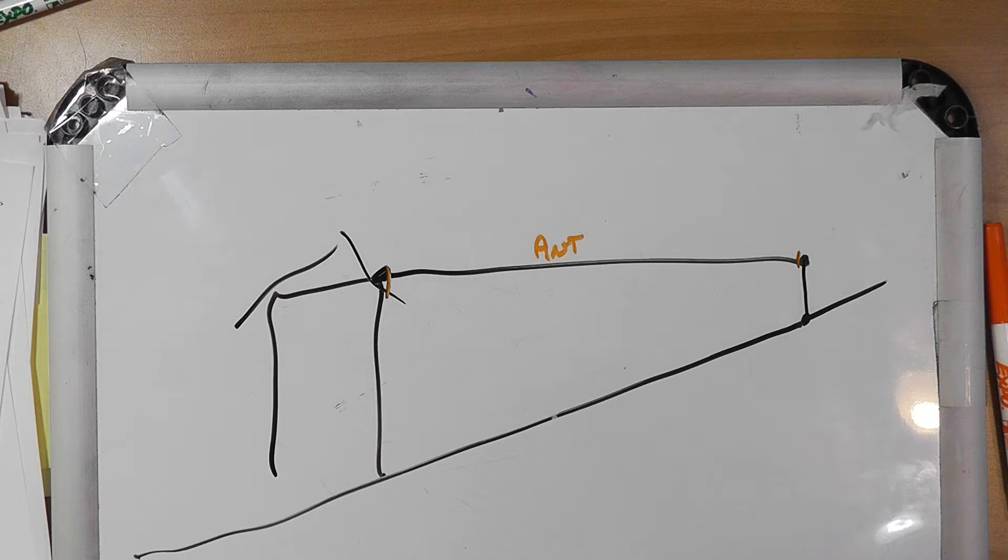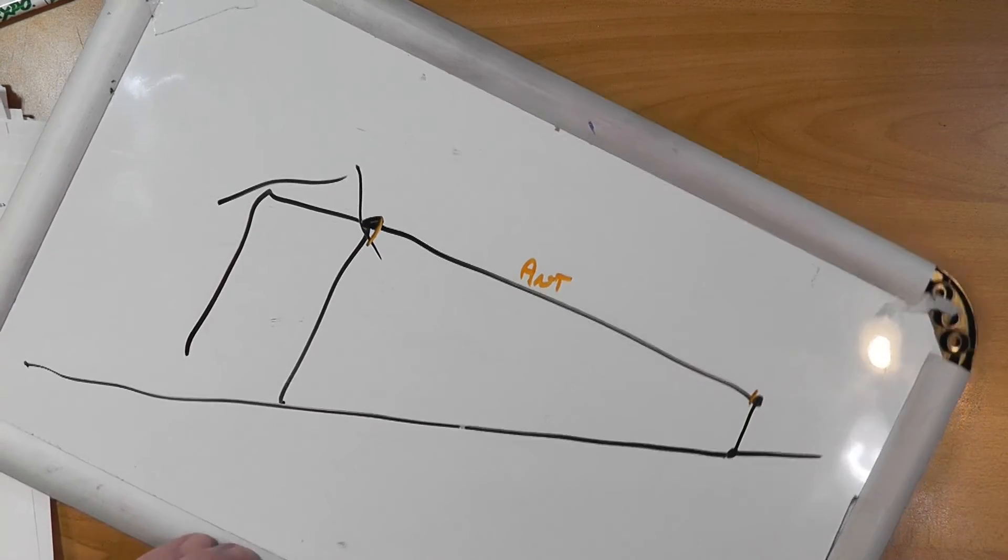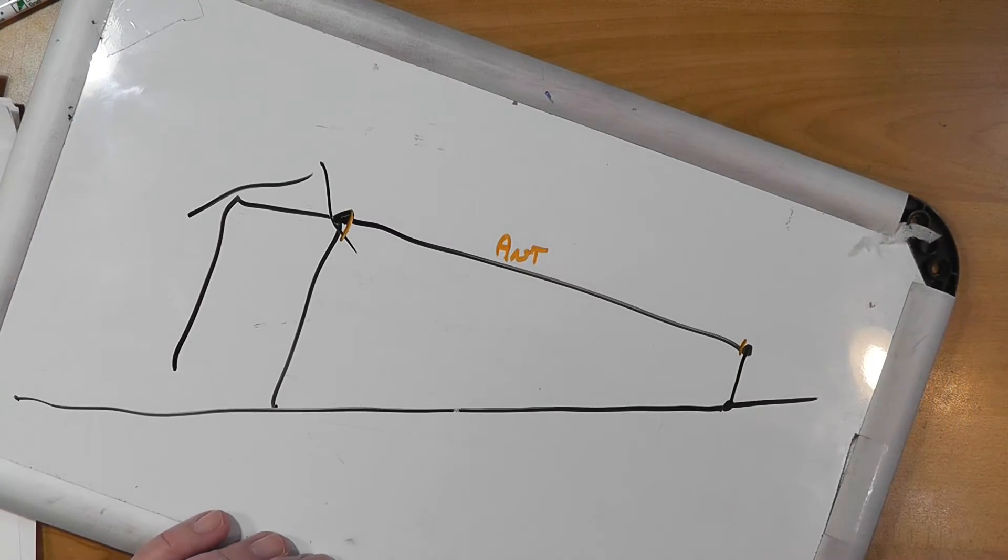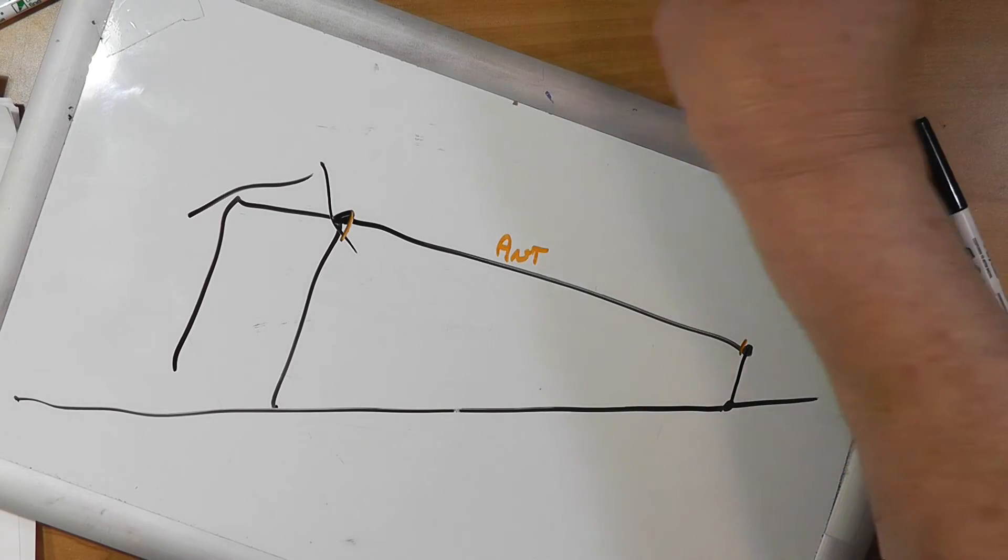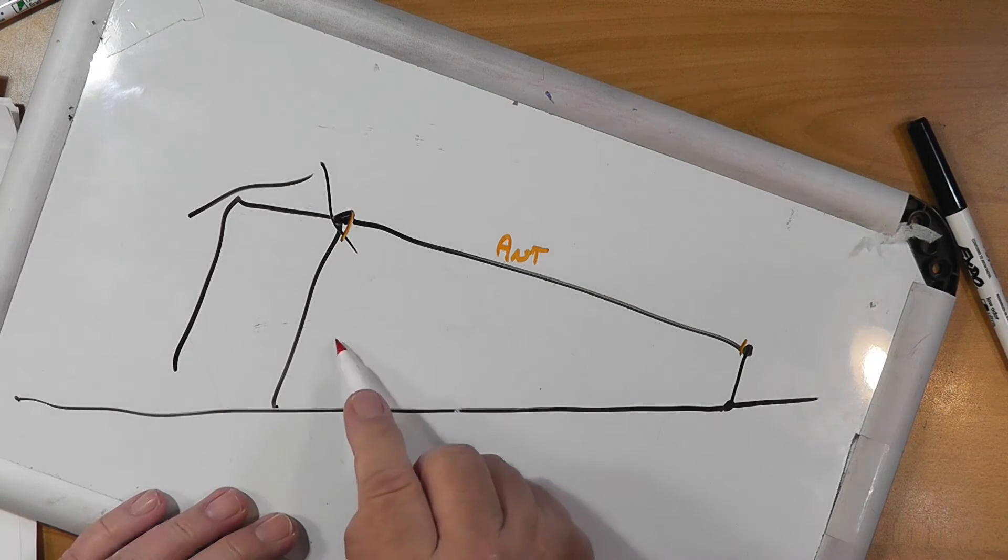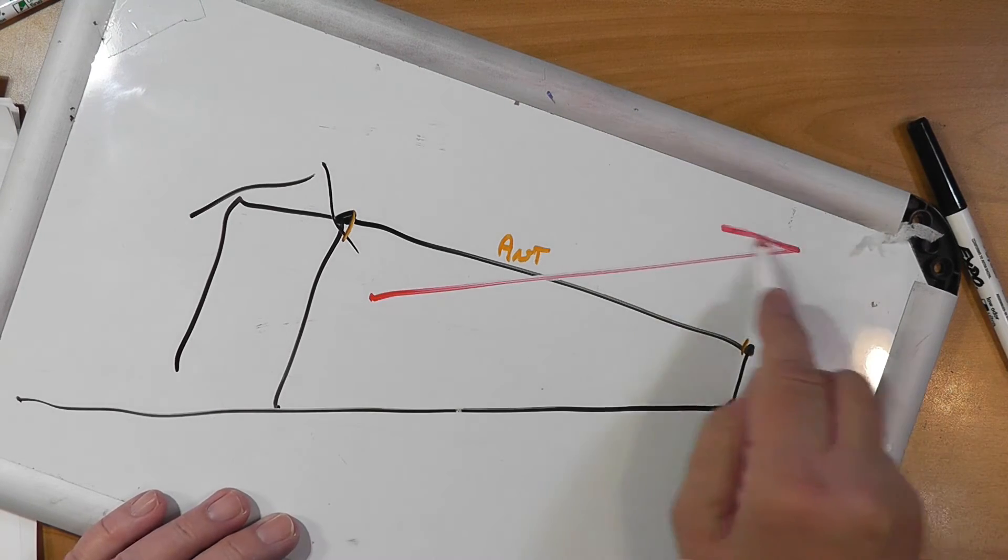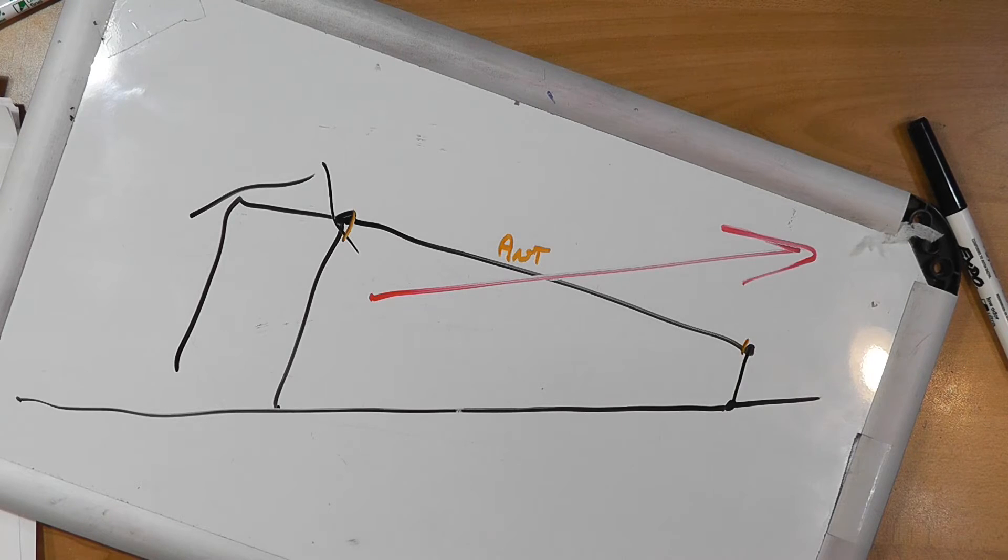But I will tell you this, if it's a sloper like this, the direction of radiation is going to be mostly this way.